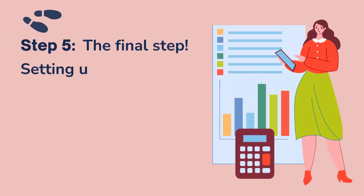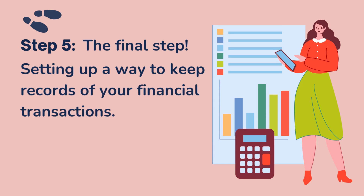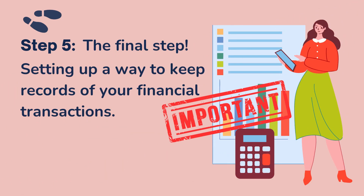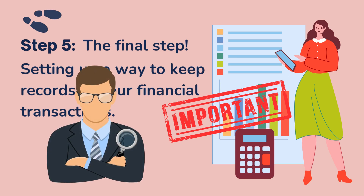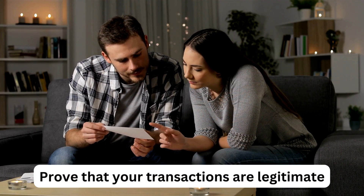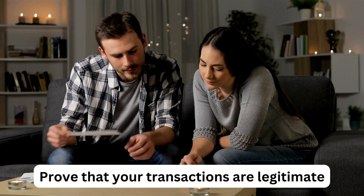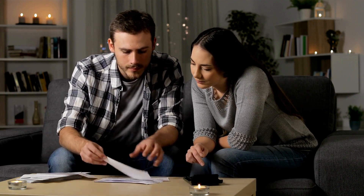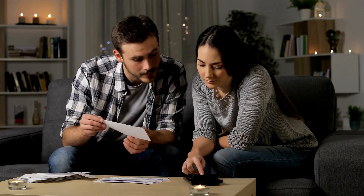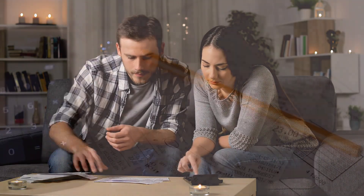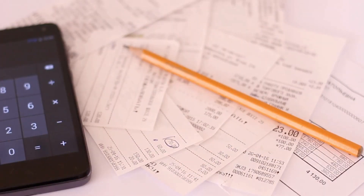Step 5. And that brings us to the final step, which is setting up a way to keep records of your financial transactions. This is important because if you get audited by the tax authorities, you may need to prove that your transactions are legitimate. It may not be good enough to simply show them your bank statements — you may also need to show receipts, invoices, or some other documentation.